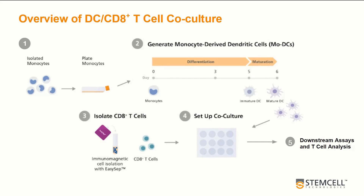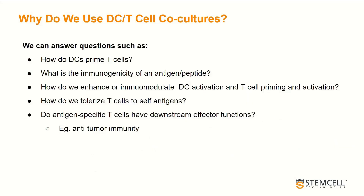We will harvest the co-cultures for a variety of downstream applications. DC-T-cell co-cultures can be utilized to help us understand a wide variety of questions in our immunological research. Some of those questions may include: what is the mechanism of DC priming of T-cells? What is the immunogenicity of an interesting or novel antigen or peptide? We might be interested in how to immunomodulate or enhance dendritic cell activation and subsequent T-cell priming and activation. We can also use them to study T-cell tolerance, and today we will focus on whether antigen-specific T-cells have downstream effector functions, for example antitumor immunity.